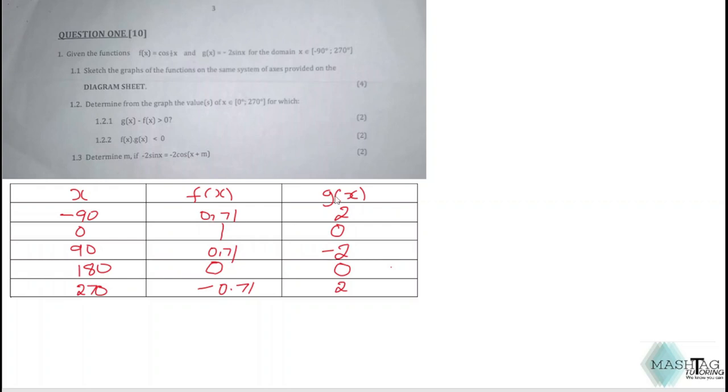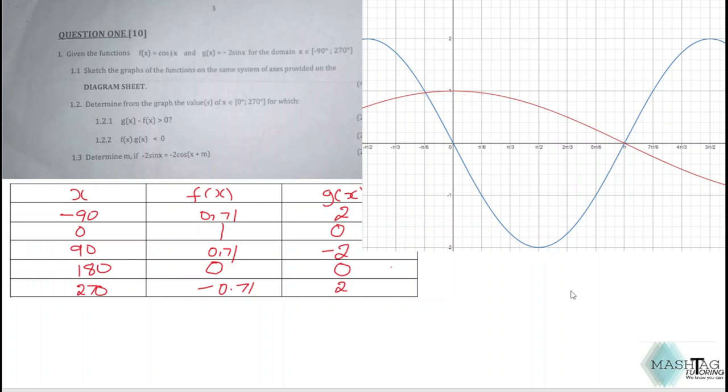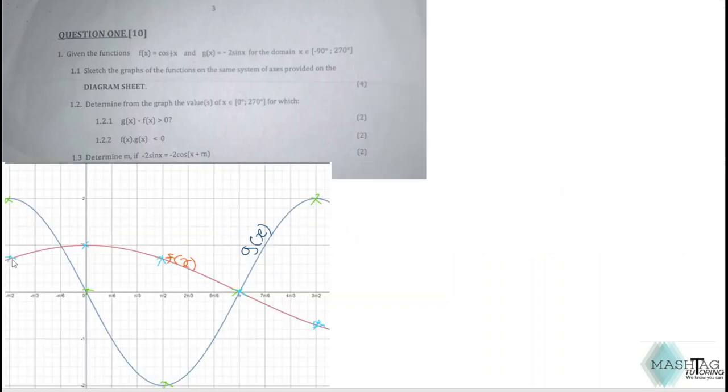Now when you have this table, you're able to plot it on this diagram sheet where I have two graphs represented by different colors. The red line represents the function f(x) whilst the blue line represents the function g(x). After this, always go back to the question and see if you have correctly answered the question. Question 1.1 asked us to sketch the graphs for both of these functions, which we have successfully done.